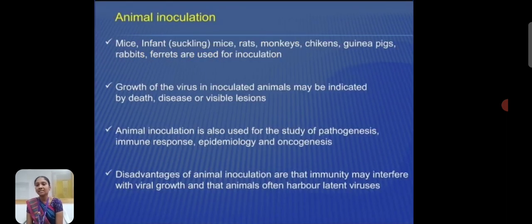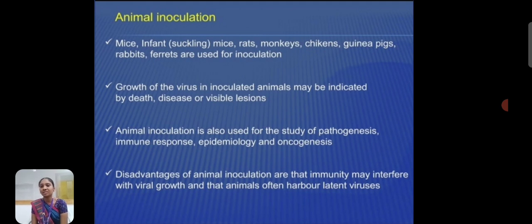Animal inoculation uses mice, infant mice, rat, monkey and chicken, guinea pig, rabbit, and others. Growth of the virus in inoculated animals is indicated by death, disease, or visible lesion. Animal inoculation is also used for study of pathogenesis, immune response, epidemiology, and oncogenesis. Disadvantages of animal inoculation include that immunity may interfere with viral growth and the animal's humoral innate response against the virus.